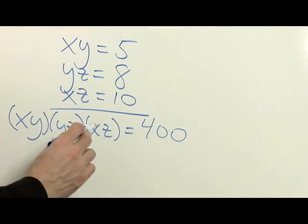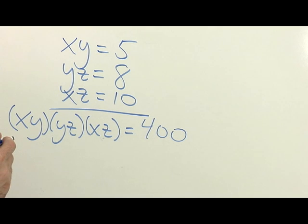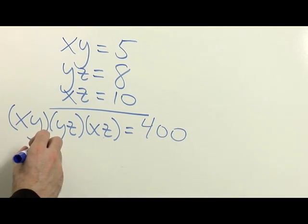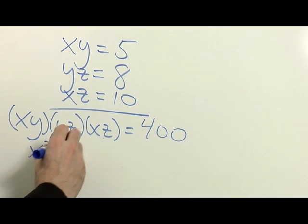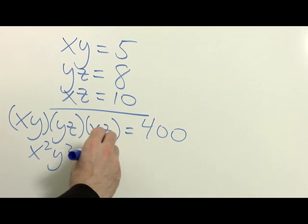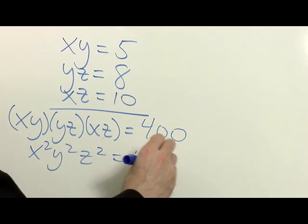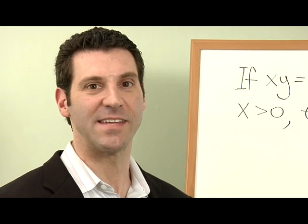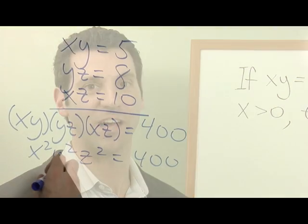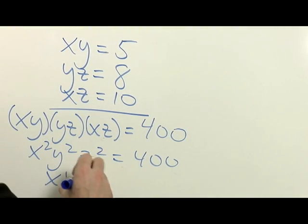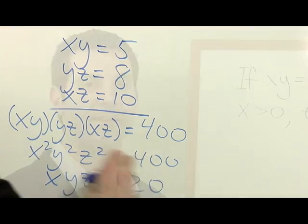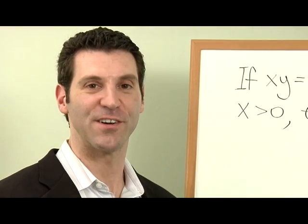Notice that on the left, each variable appears twice. So the left-hand side becomes x squared times y squared times z squared. Finally, we could finish the problem by taking the square root of each side. Therefore, the answer is 20.